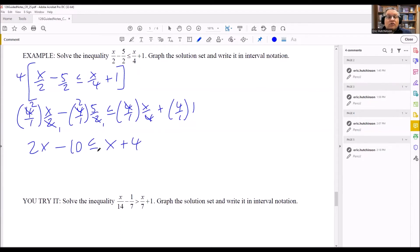From here, we just need to solve for x. I'm going to subtract x from both sides because I want to get all the x's on one side of the equation. I get x - 10 ≤ 4. And then I add 10 to both sides. So doing that gives us x ≤ 14 by adding 10 to both sides to get the x by itself.